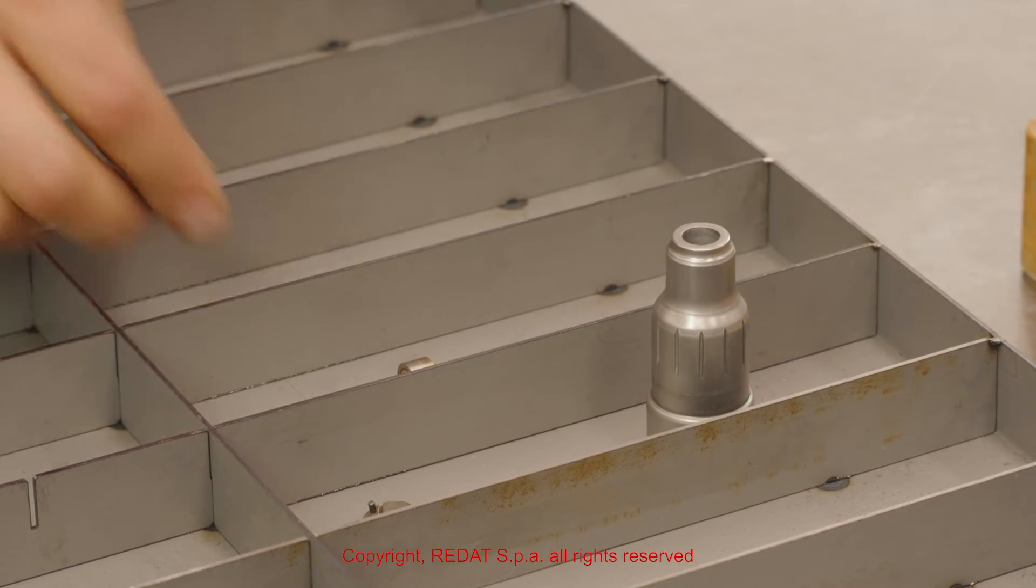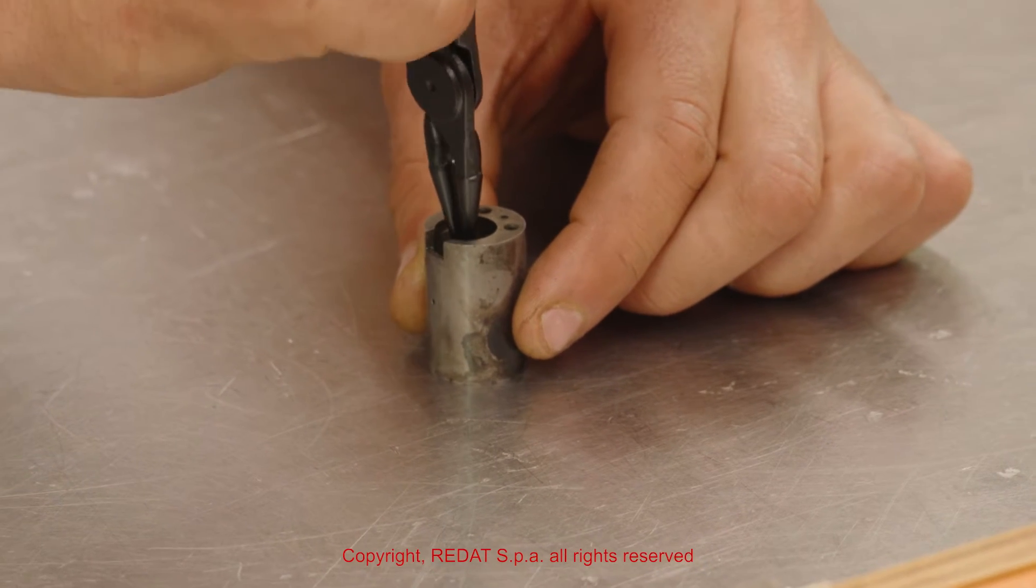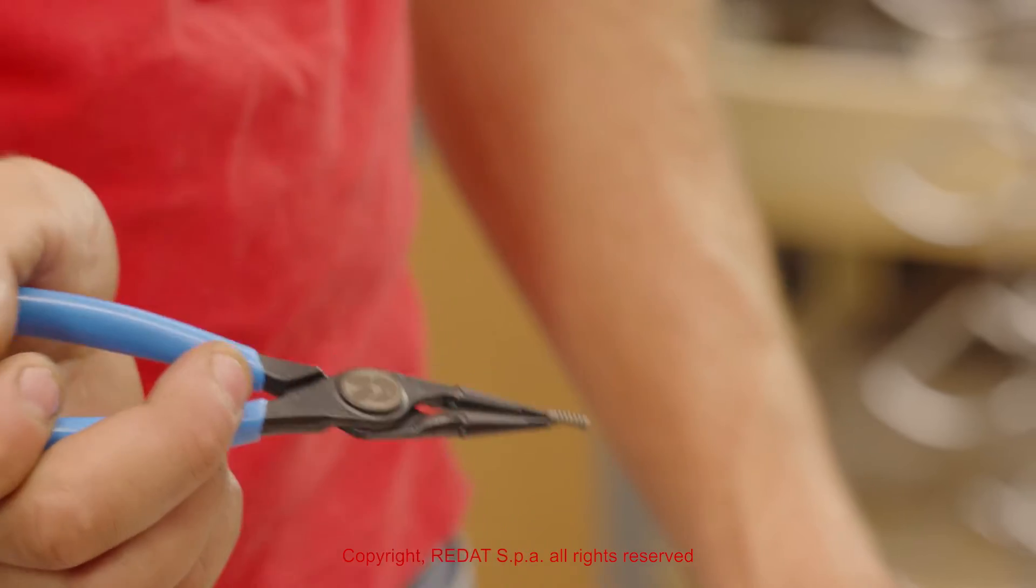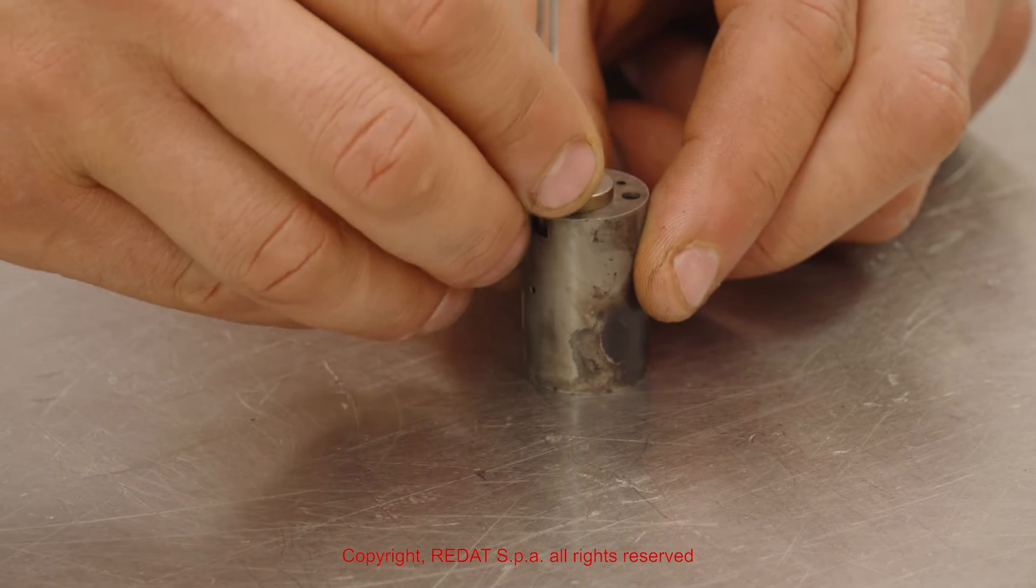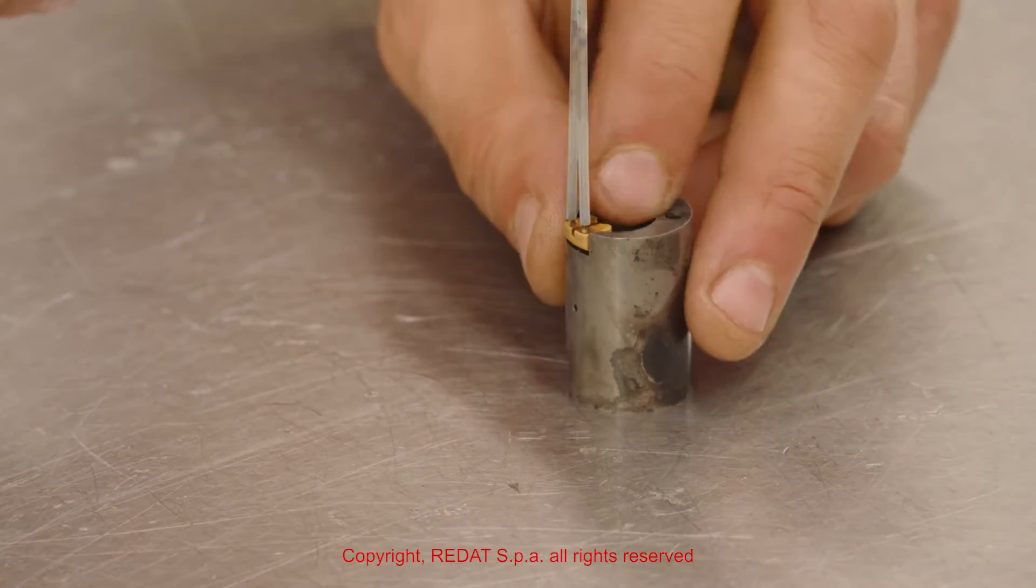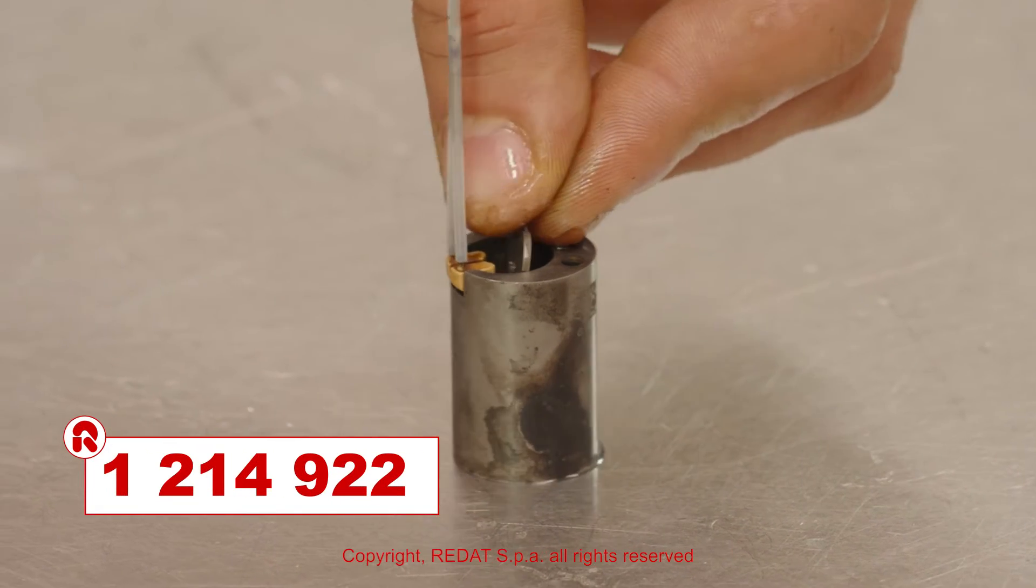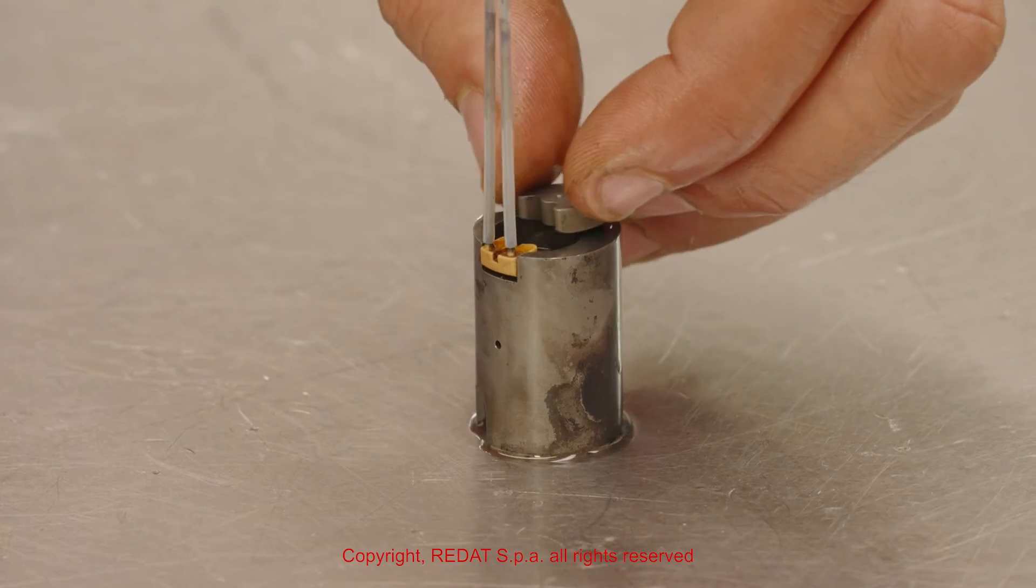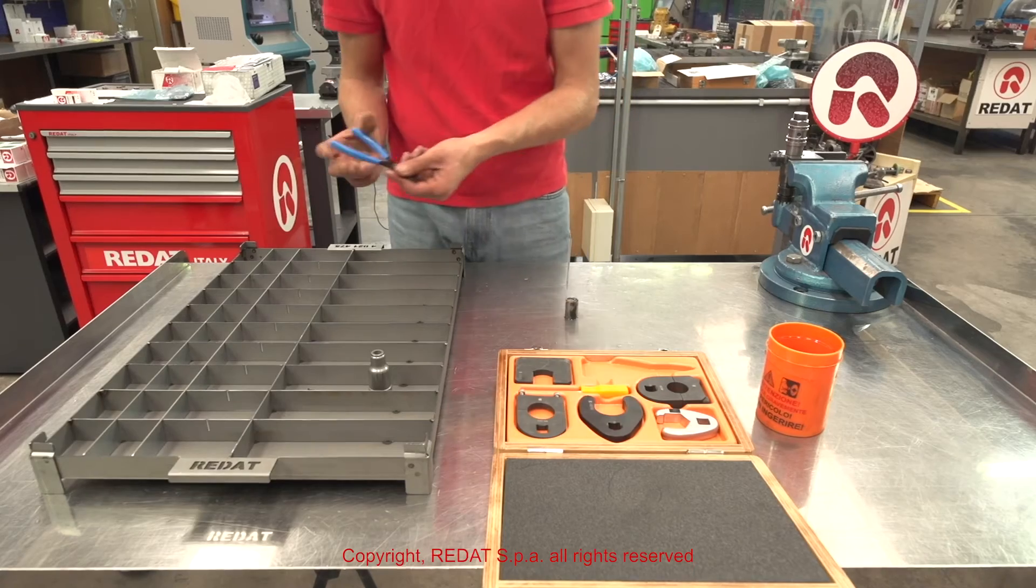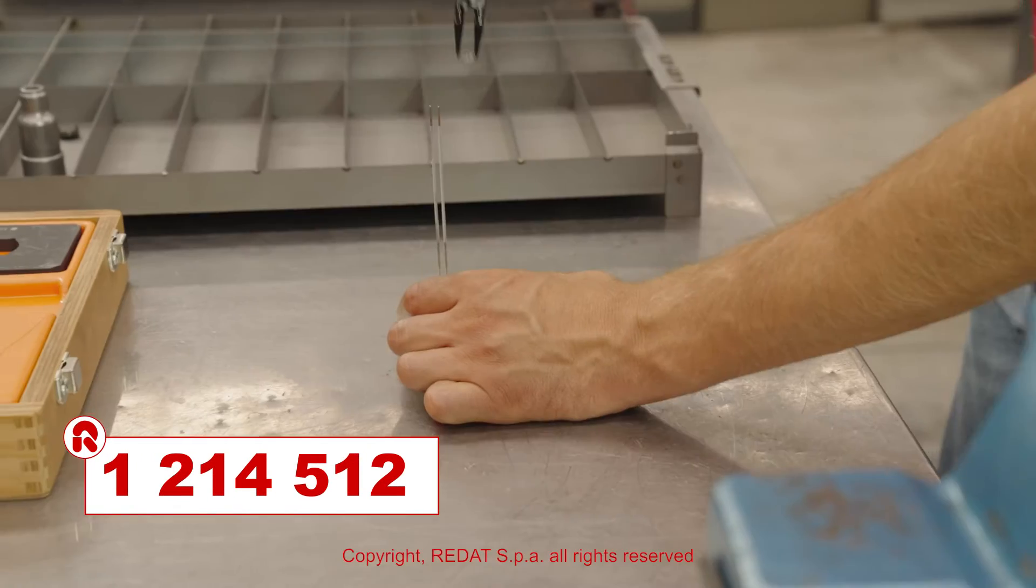We assemble the components inside the bush. Using the plates kits 1 2 1 4 9 2 1 and 1 2 1 4 9 2 2, we can proceed to the correct calibration. With the pliers 4 0 2 0 7 0 0, we lock the cage 1 2 1 4 5 1 2 into the bush.